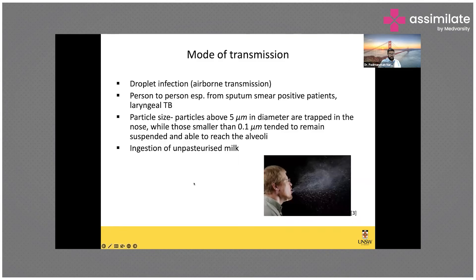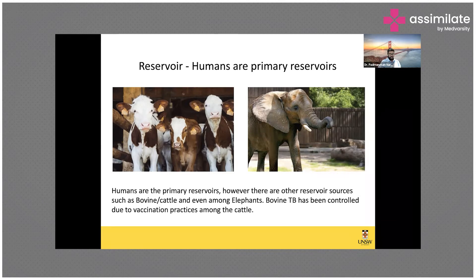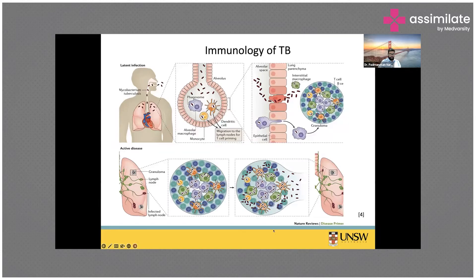You can also get tuberculosis by ingestion of unpasteurized milk. Humans are the primary reservoirs for tuberculosis, but you can also contract it through cattle — what is called bovine TB. Fortunately, we boil milk and have pasteurized milk these days, so we see very little bovine TB, though there are some incidents where TB can be contracted through animals like elephants.